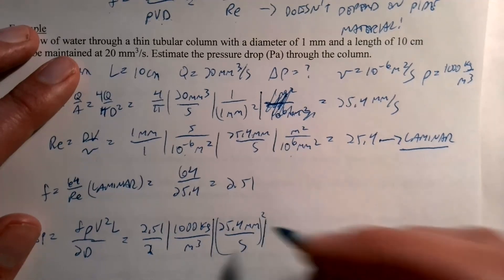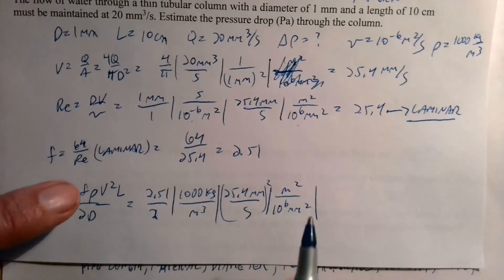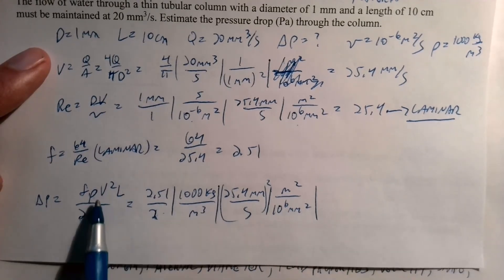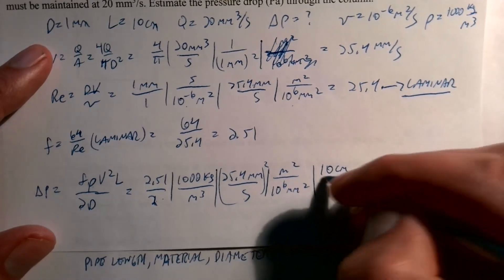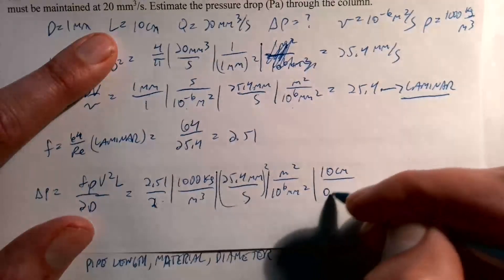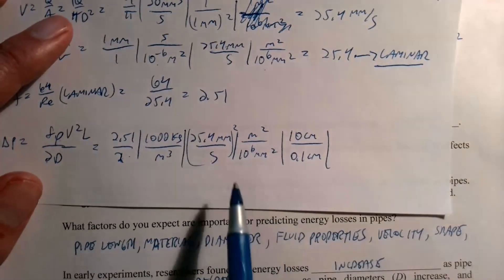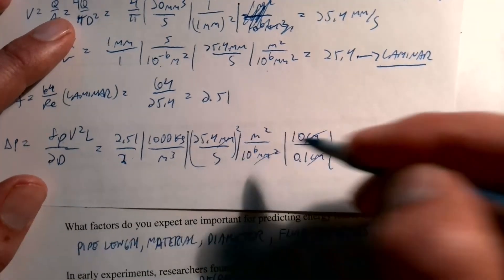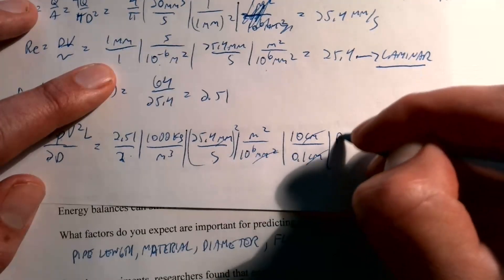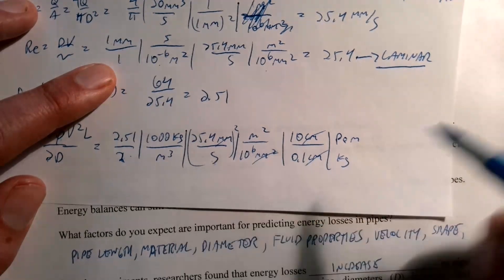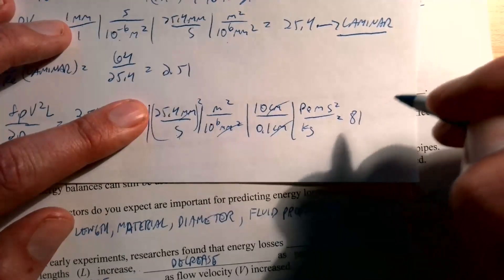Plugging in with L = 10 cm and D = 1 mm = 0.1 cm — so L/D = 100 — and carefully converting units (mm² to m²), the result works out in units of kg/(m·s²), which is Pascals. The pressure drop comes out to be 81 Pa.